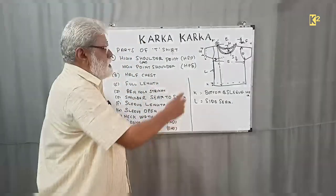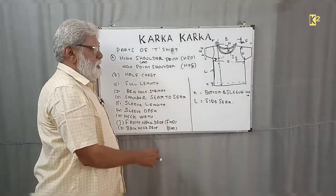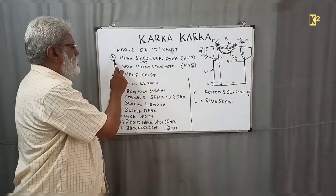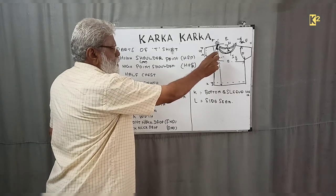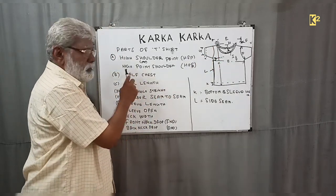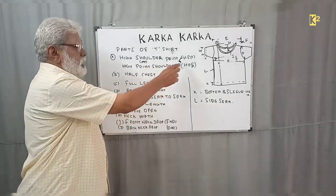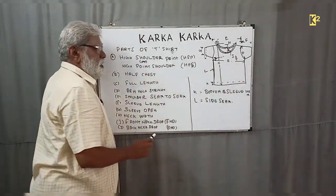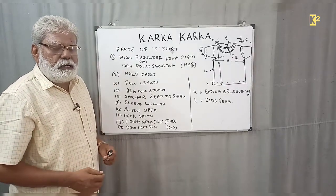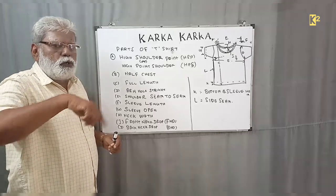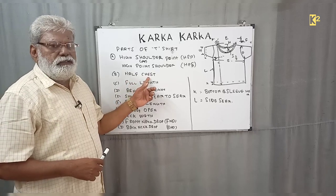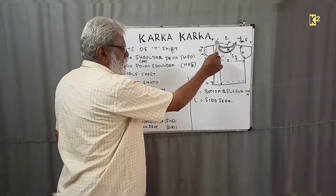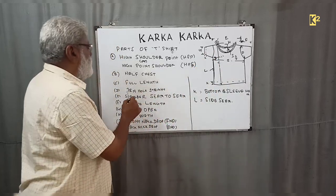I have drawn the basic rib neck, also called a round neck. Point A is the high shoulder point, also called high point shoulder — HSP or HPS, both are the same. Half chest is measured from one edge to the other edge. In tailoring they take the full chest round, but in t-shirts we give half chest. The full length is measured from the high shoulder point down to the bottom of the t-shirt.